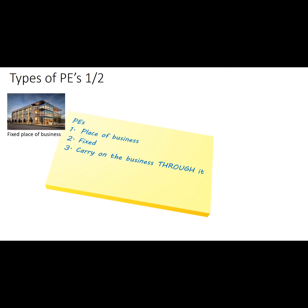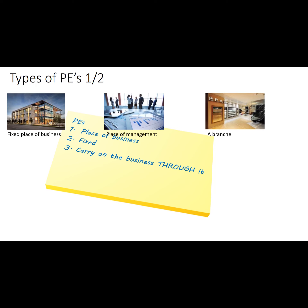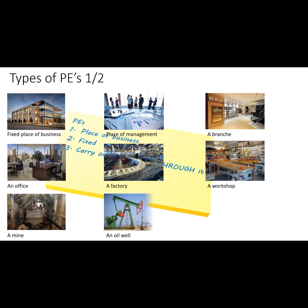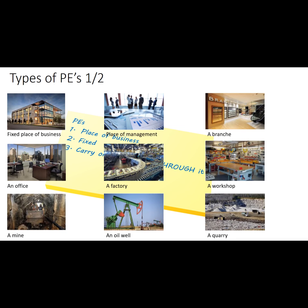Third, through which the business is carried on. Examples of other PEs are listed in Article 5.2 and include: a place of management, which is not necessarily an office; a branch, as described in the previous slide; or an office, a factory, a workshop, a mine, an oil well, a quarry, or other places of extraction of natural resources.